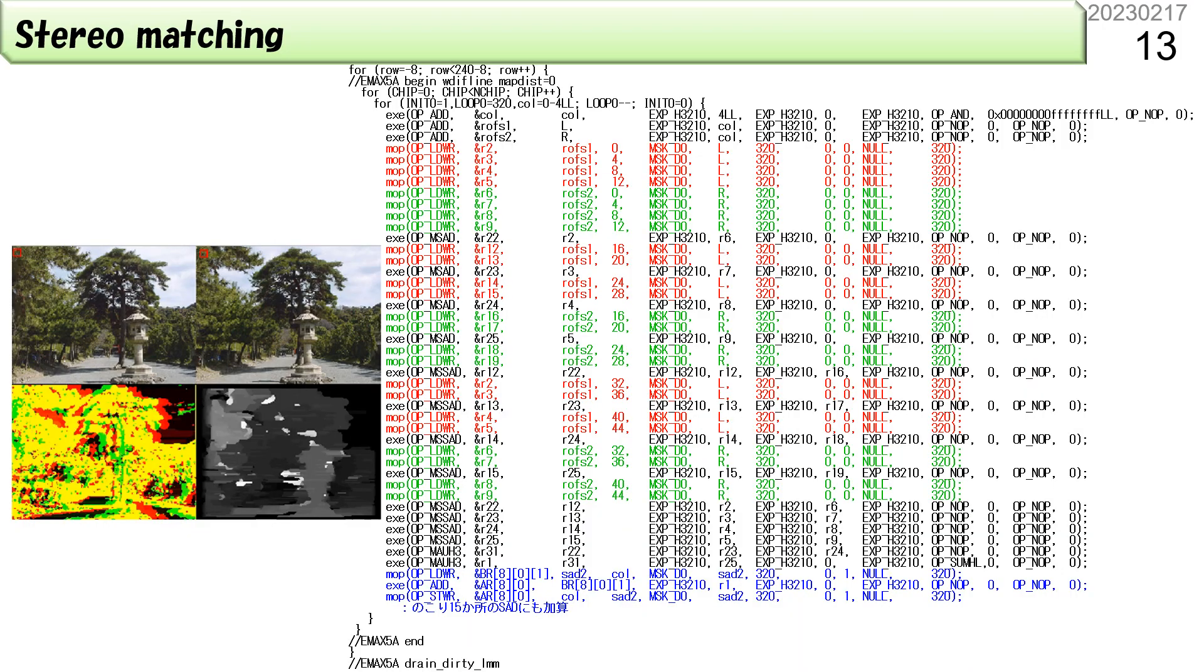This is the case of stereo matching written in standard C language. The red lines are for getting the left image, and the green lines are for the right image. The blue lines store the depth information. This program occupies 24 units in one line. The important point of CGRA is that all of the operations are executed at the same time.